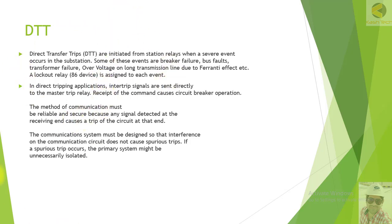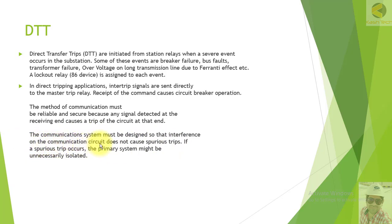There is no logical check or condition check in DTT. The method of communication must be reliable and secure because any signal detected at the receiving end causes a trip of the circuit at that end. If communication is not reliable and a spurious signal is received, DTT will not check whether the signal is correct or not — there are no conditional or logical checks involved. It will trip immediately, so it is most important that DTT uses a very reliable communication medium.